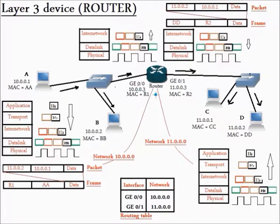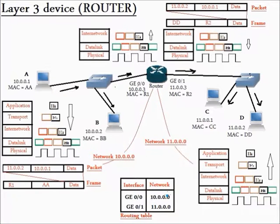In the router, we have a table called the routing table. The routing table is stored in the router's memory. In the routing table, we have two columns: the interface column and the network column. The interface column lists all the interfaces of the router, and the network column lists all the networks that the router connects to.